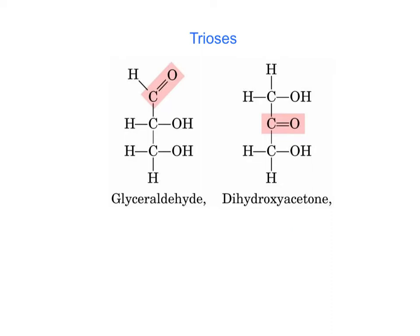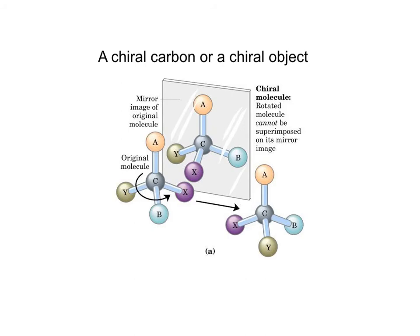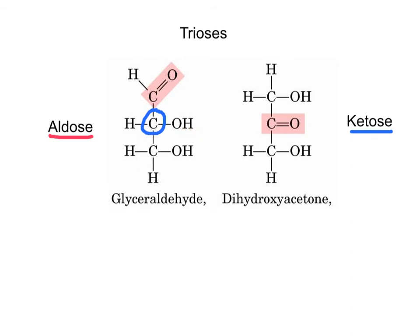These are the simplest carbohydrates possible — glyceraldehyde and dihydroxyacetone — which do not follow the rule of ending with '-ose.' Glyceraldehyde is an aldose and dihydroxyacetone is a ketose. A molecule can be identified as chiral if a carbon is bonded to four different groups. With exception of glycine, all amino acids are chiral. Also, with exception of dihydroxyacetone, all carbohydrates are chiral. Carbon number two on glyceraldehyde is a chiral carbon because four different groups are attached to it.